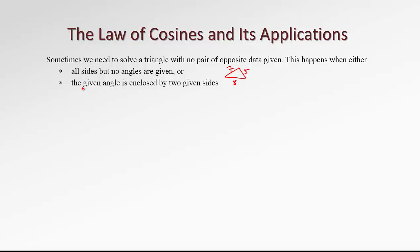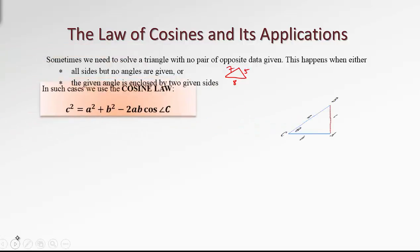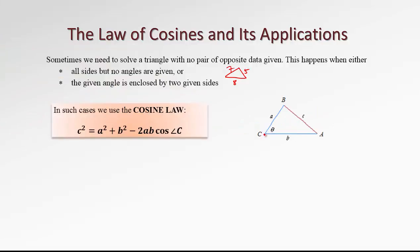The second situation is when there is one given angle, but this angle is enclosed by two given sides. We may have sides A and B given — say A is 6 and B is 8 — with the enclosed angle theta of, for example, 50 degrees. In such a situation, again, we don't have even one opposite pair of data, so the sine law doesn't apply.